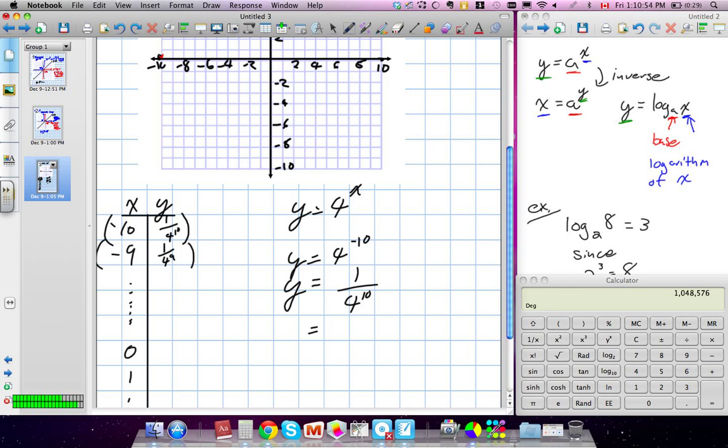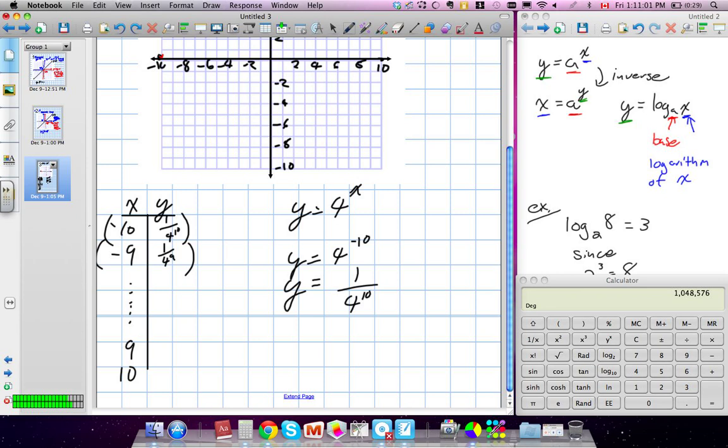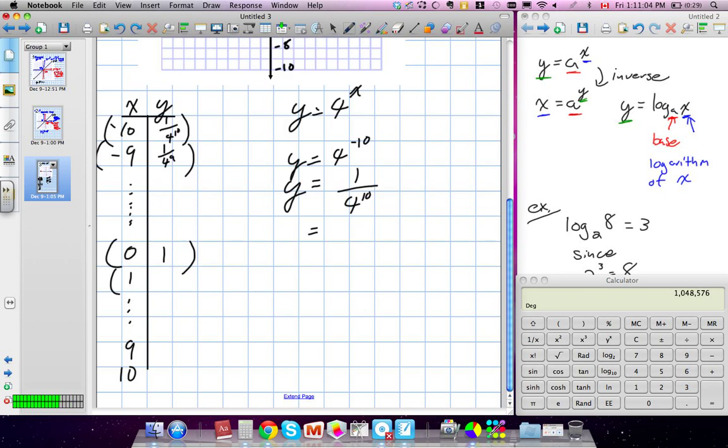What about when y is 0? Sorry. When x is 0, what's my y value going to be? 1. Great. Here's another key point. What about when x is 1? What would my y value be? y is equal to 4 to the power of 1? Yeah, it's 4, right? So we know that's going to be a key point on our thing also. Whatever our base is, our 1 value is going to be that base number.